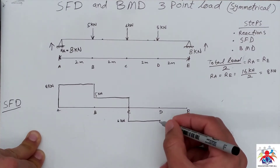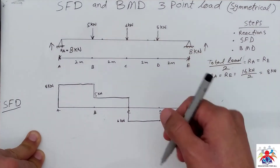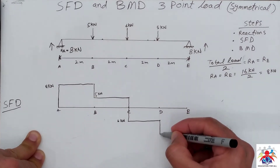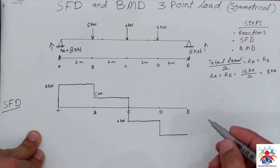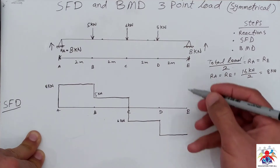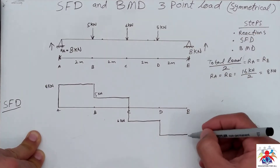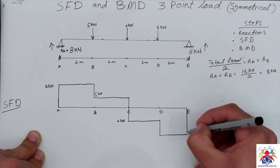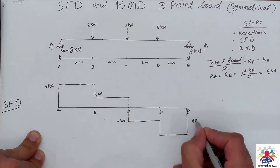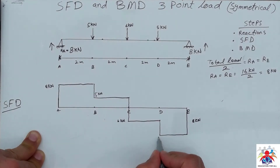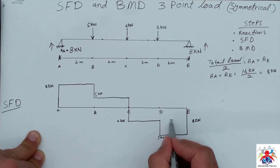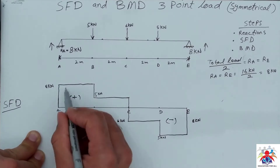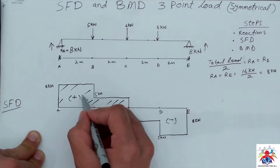At point D we have a 5 kilonewton load acting downwards again, so it goes straight down. Then at point E, the reaction is 8 kilonewtons acting upward, so we draw a line up 8 kilonewtons. We have 5 kilonewtons in the negative zone and a positive zone. This is our shear force diagram.